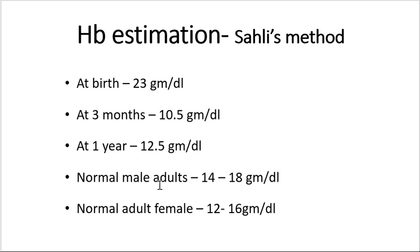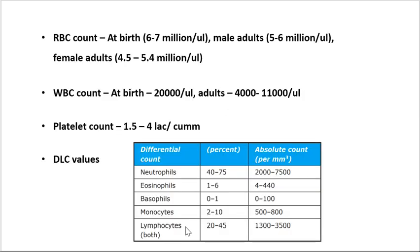The normal hemoglobin values for male adults are 14 to 18 gram per deciliter and for females 12 to 16 gram per deciliter. RBC normal count at birth is around 6 to 7 million per cubic mm or micro liter.